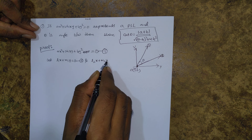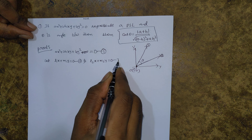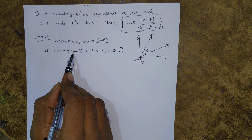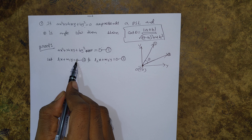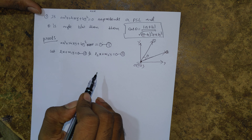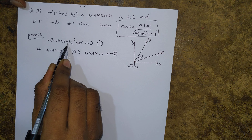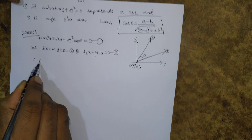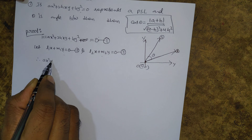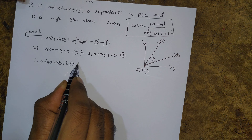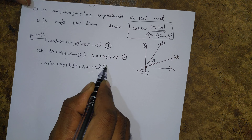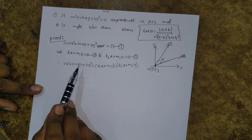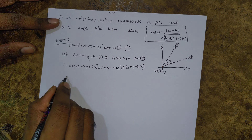And L2x + M2y = 0, passing through the origin — this is Equation 3. Since Equation 1 represents these two lines, the combined equation is: ax² + 2hxy + by² = (L1x + M1y)(L2x + M2y). By multiplying these two lines and comparing coefficients of x², xy, and y², we get certain values.